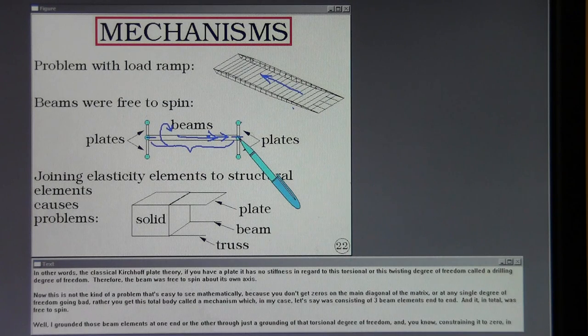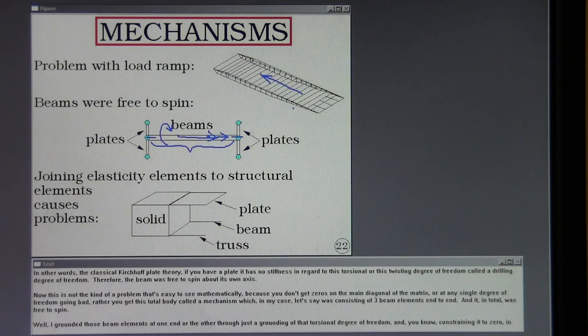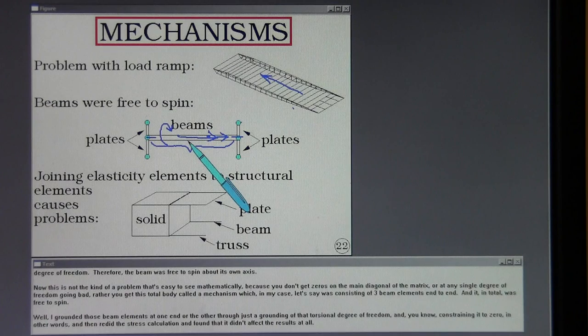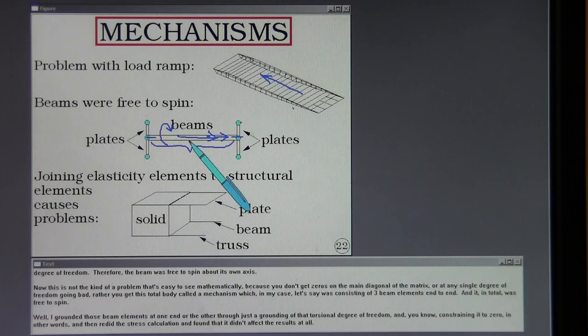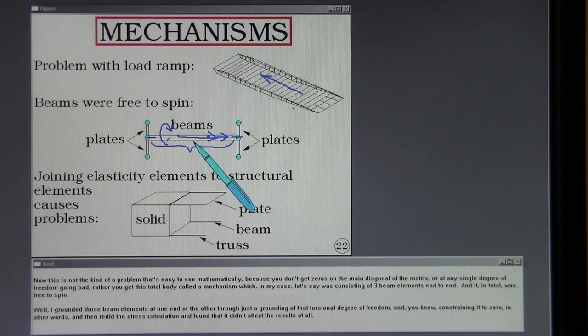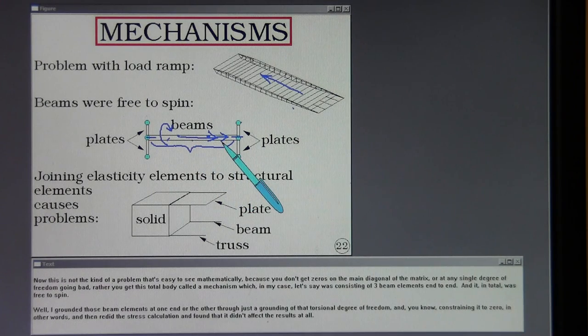Now, this is not the kind of a problem that's easy to see mathematically because you don't get zeros on the main diagonal of the matrix or at any single degree of freedom going bad. Rather, you get this total body called a mechanism, which in my case, let's say, was consisting of three beam elements end to end. And it, in total, was free to spin.